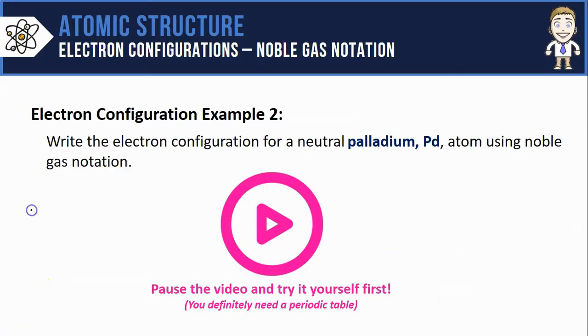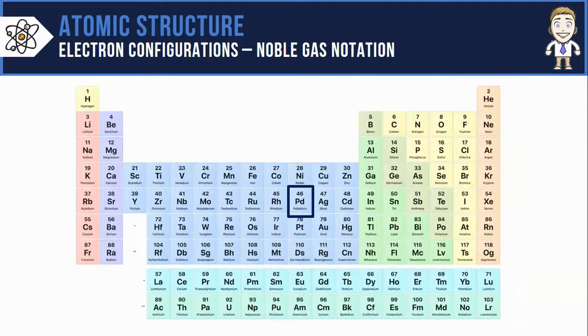Let's do one more noble gas style electron configuration, this time for palladium. Why don't you pause the video and try yourself first? So the first thing I need to do to complete this configuration is find it on the periodic table. There's Pd, 46 electrons.